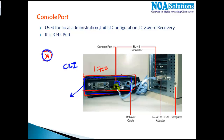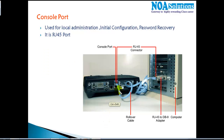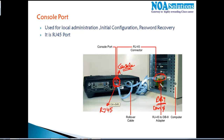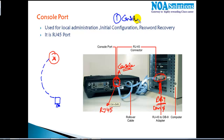The console cable has an RJ45 connector on one end, which connects to the console port on the router. The other end has a DB9 port — a 9-pin connector — which you find on the back of your computer, called a COM port. We connect one side to the router's console port and the other side to the computer's DB9 port. This is called a console connection.